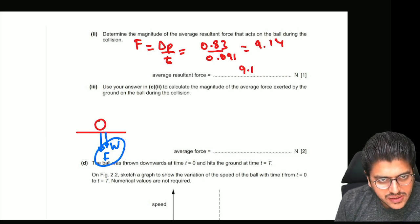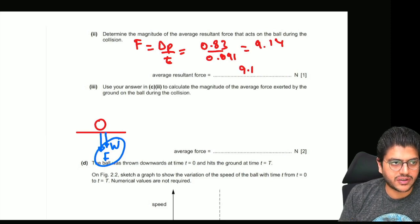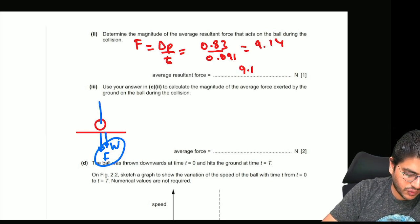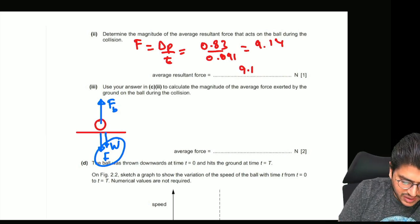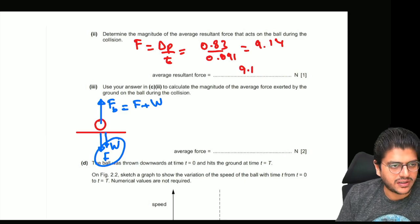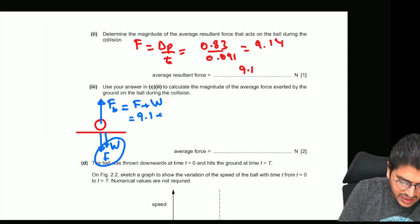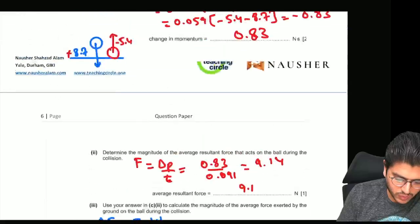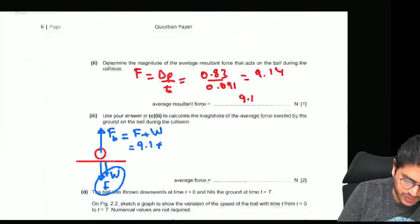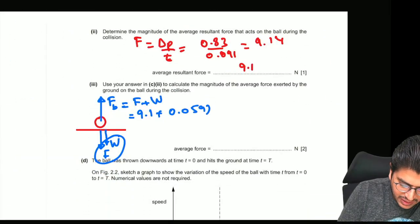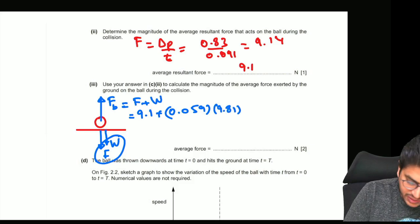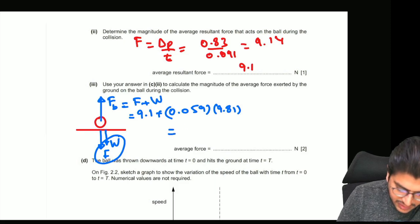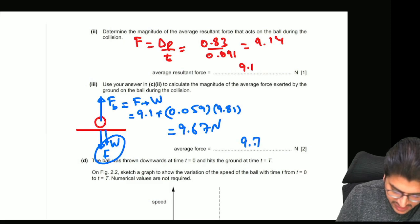As a result, when they're asking what is the average force exerted by the ground on the ball, it's going to be the same as F and W, which is 9.1 newtons and the weight of the object. We don't have the weight; we have the mass, which is 0.059 kg, so 0.059 times 9.81 plus 9.1. I'm getting 9.67 newtons, so 9.7 newtons is the answer. I hope this is clear.